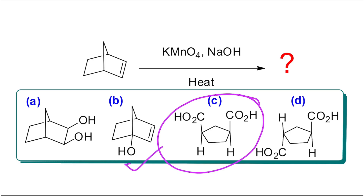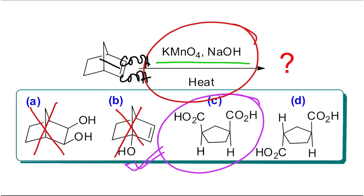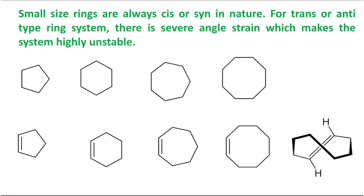As I told you, the answer is option C. Now, if you got this in an exam, how could you arrive at the right answer in less than 30 seconds? First, understand the reaction conditions: KMnO₄, sodium hydroxide, heat — drastic conditions — so the reaction will not stop at the diol stage. The reaction happens on the alkene, it is a ring compound, and both carboxylic acid groups point in the same direction. So: option C.